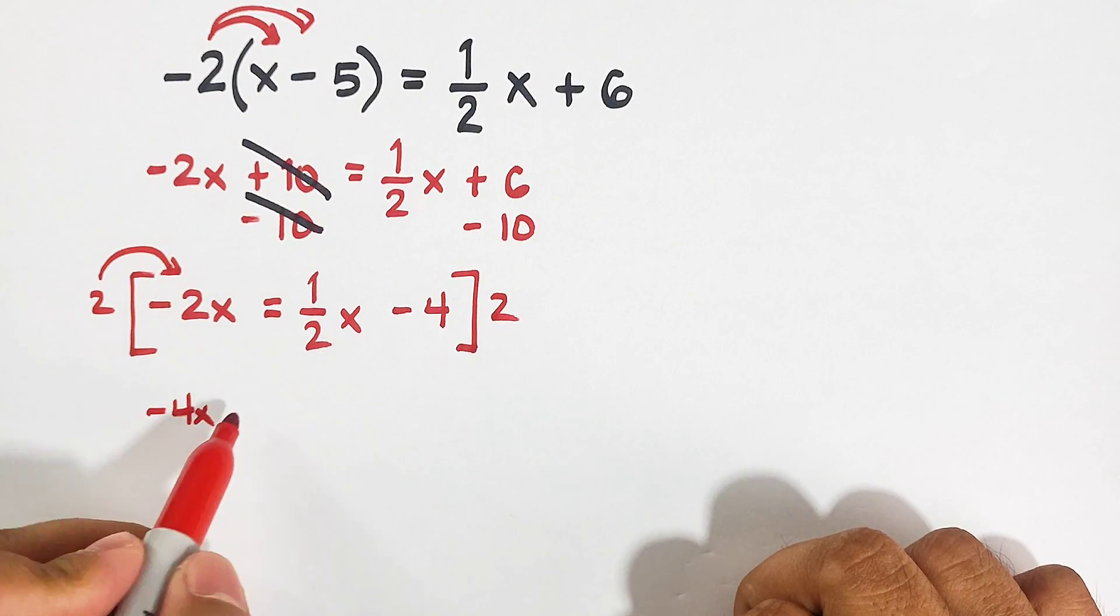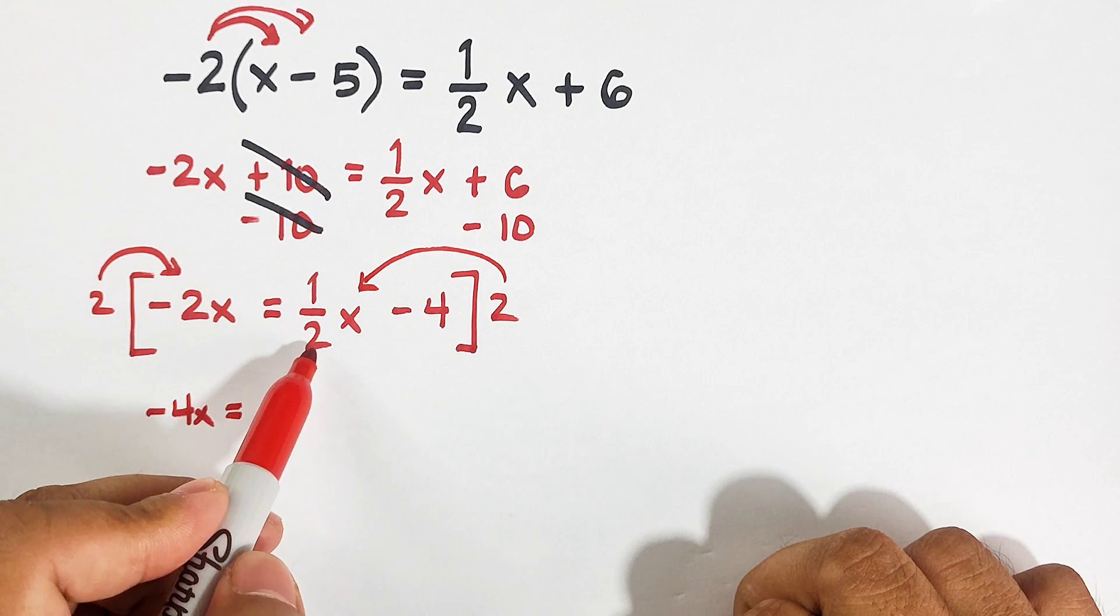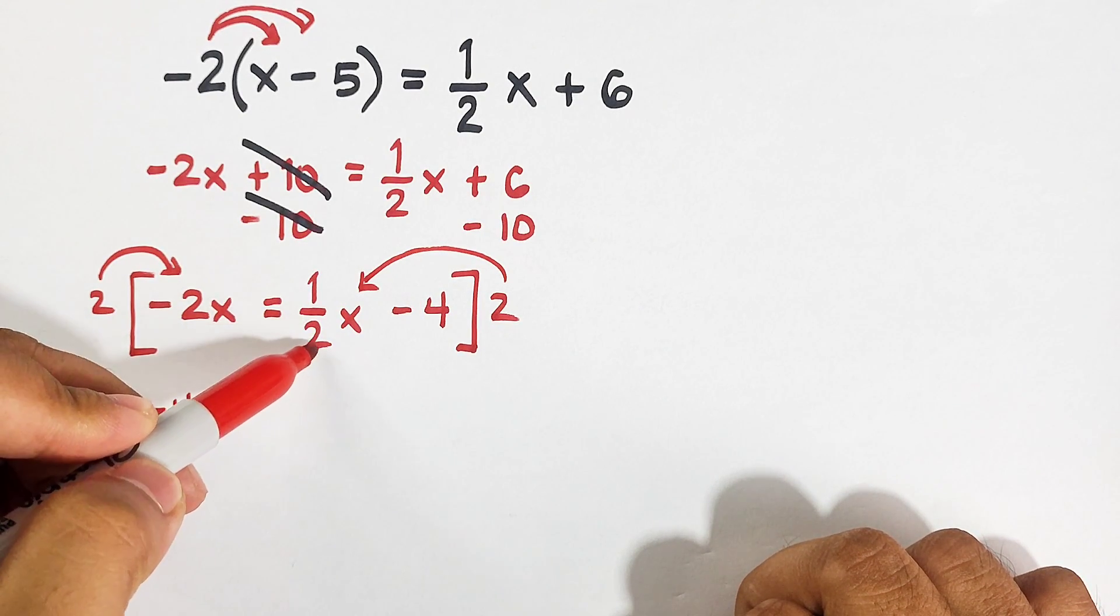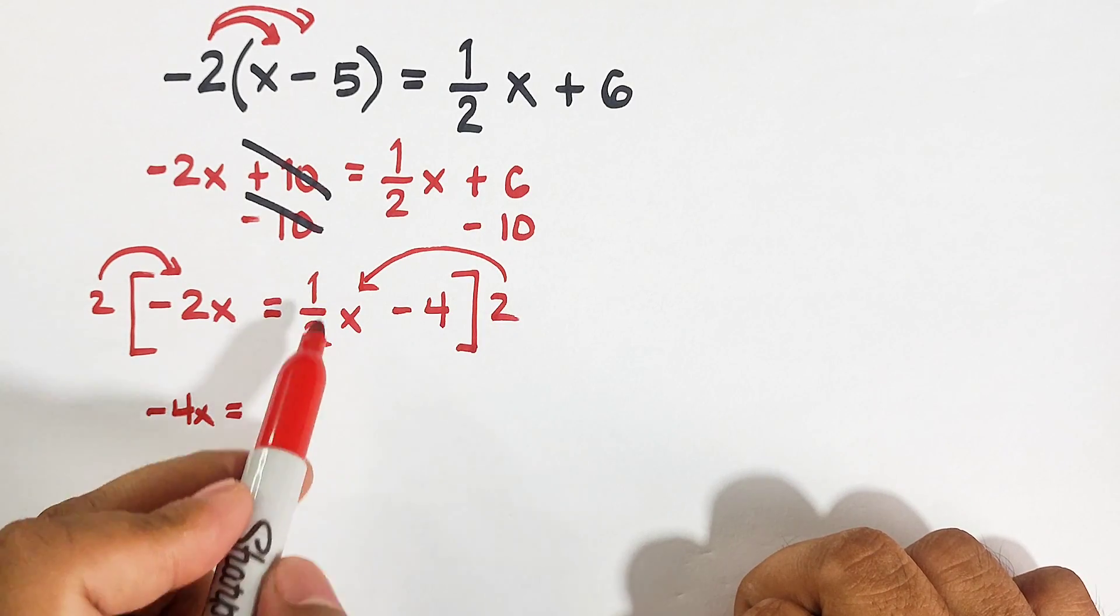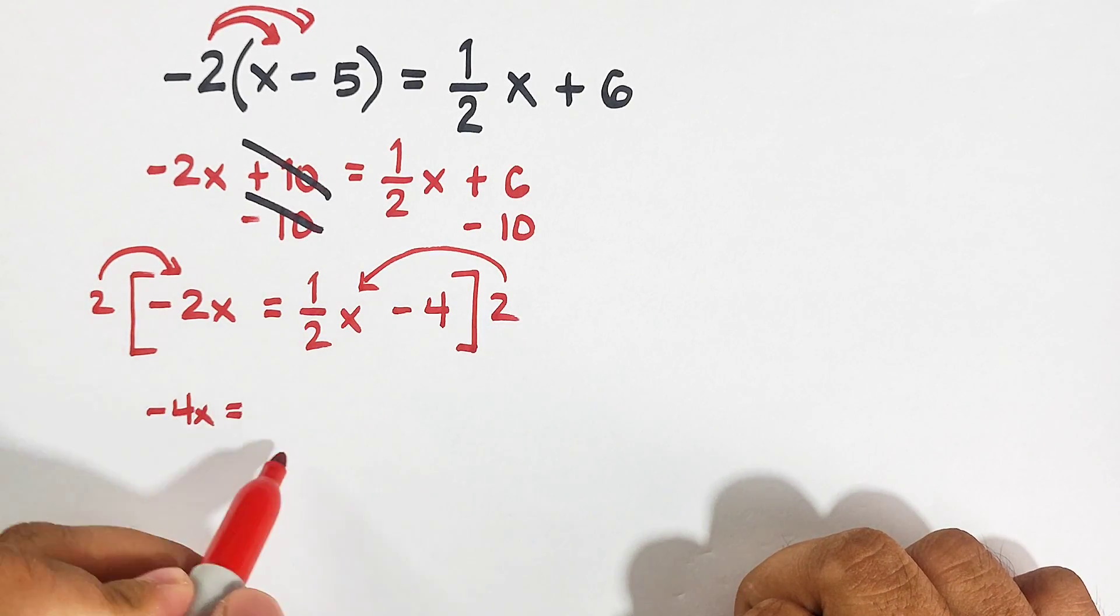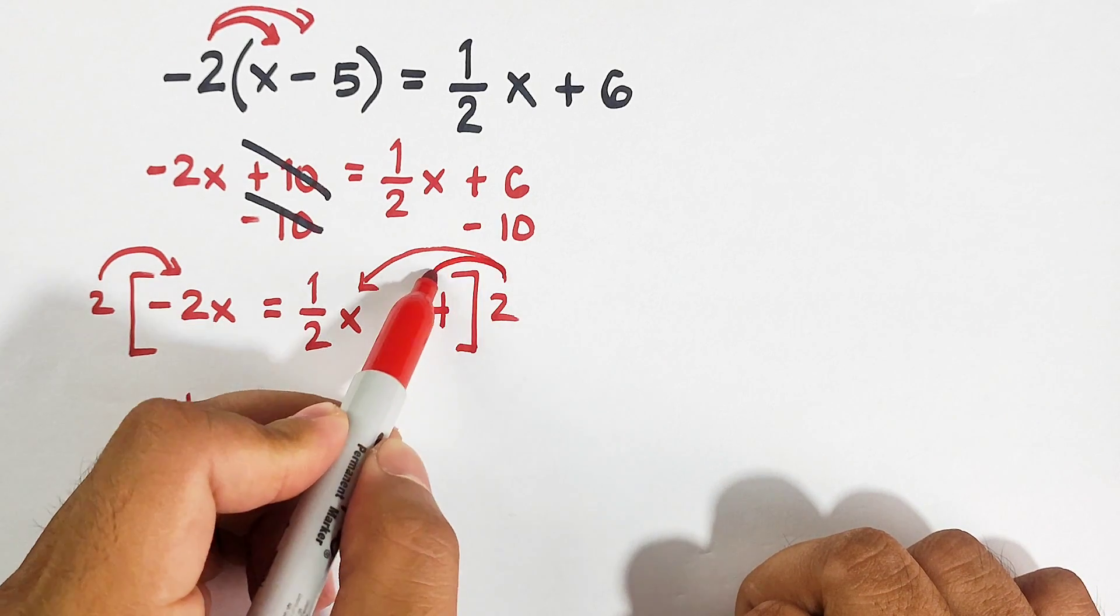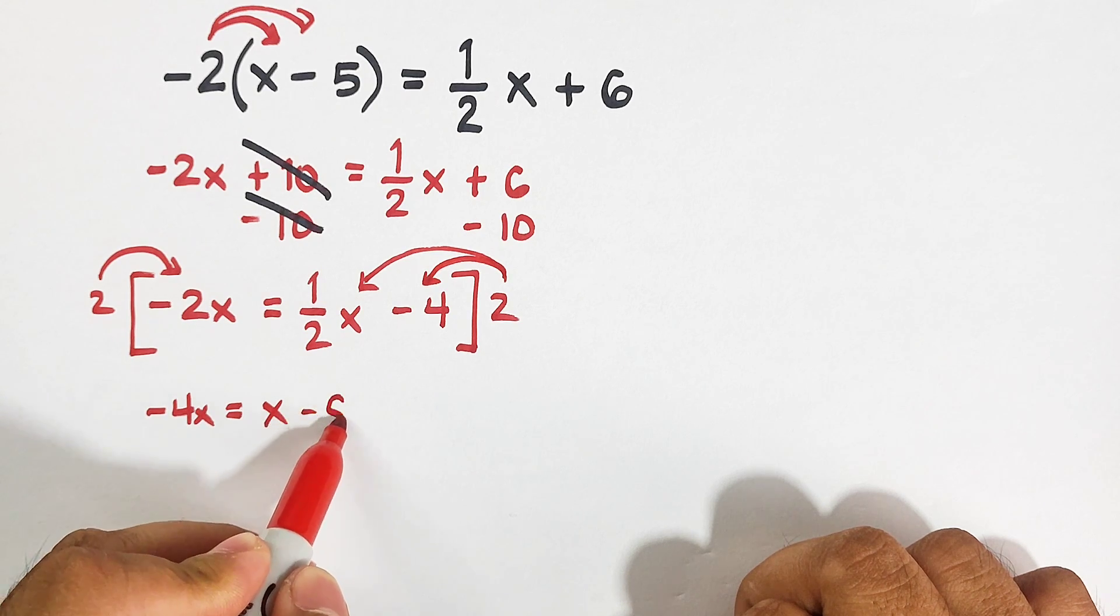Here on the other side, I will distribute 2. 2 times one-half x. Our target here is to eliminate this denominator 2, and this 2 will be cancelled out. So one-half x times 2 is simply x. Then I will multiply 2 and negative 4. This is negative 8.